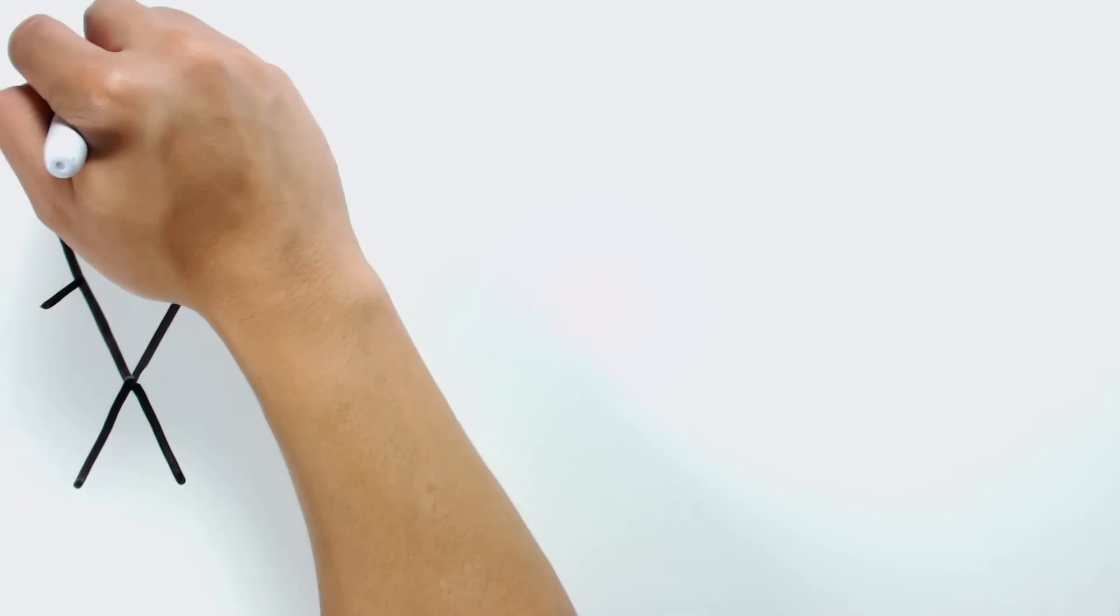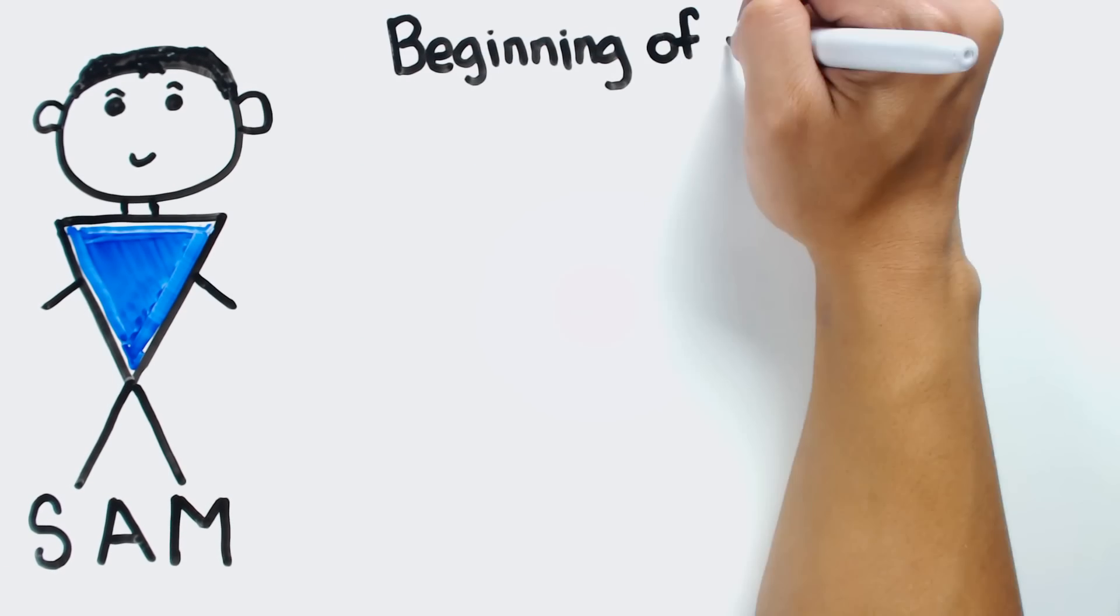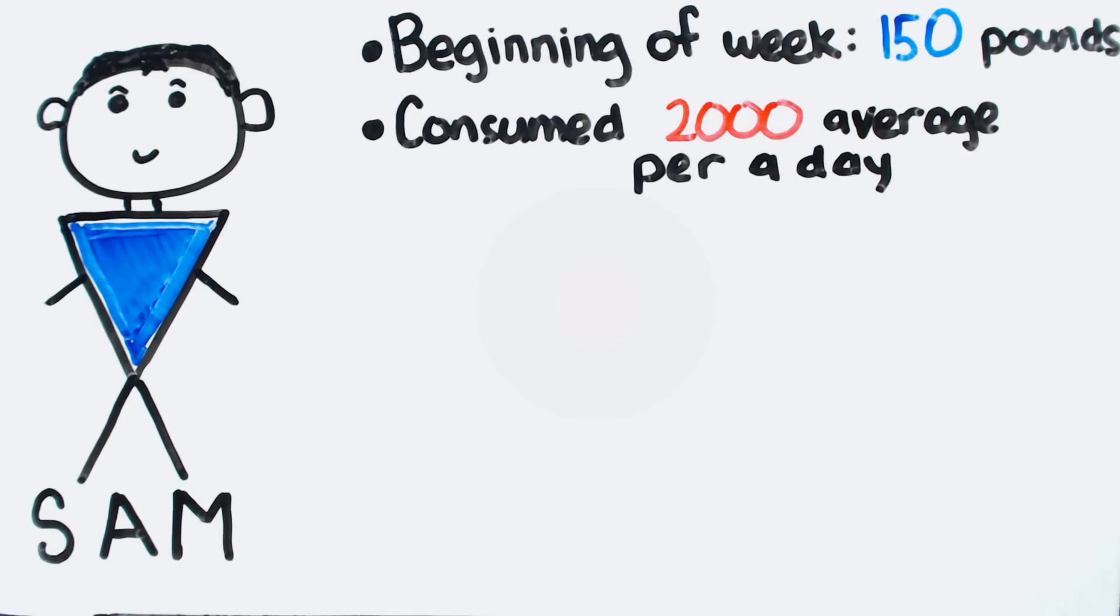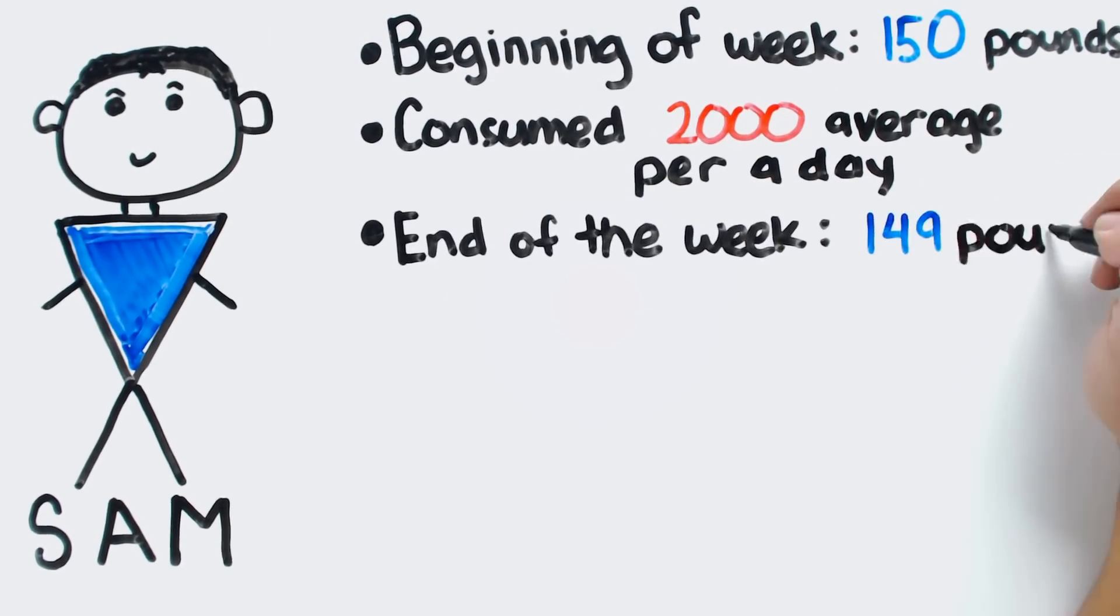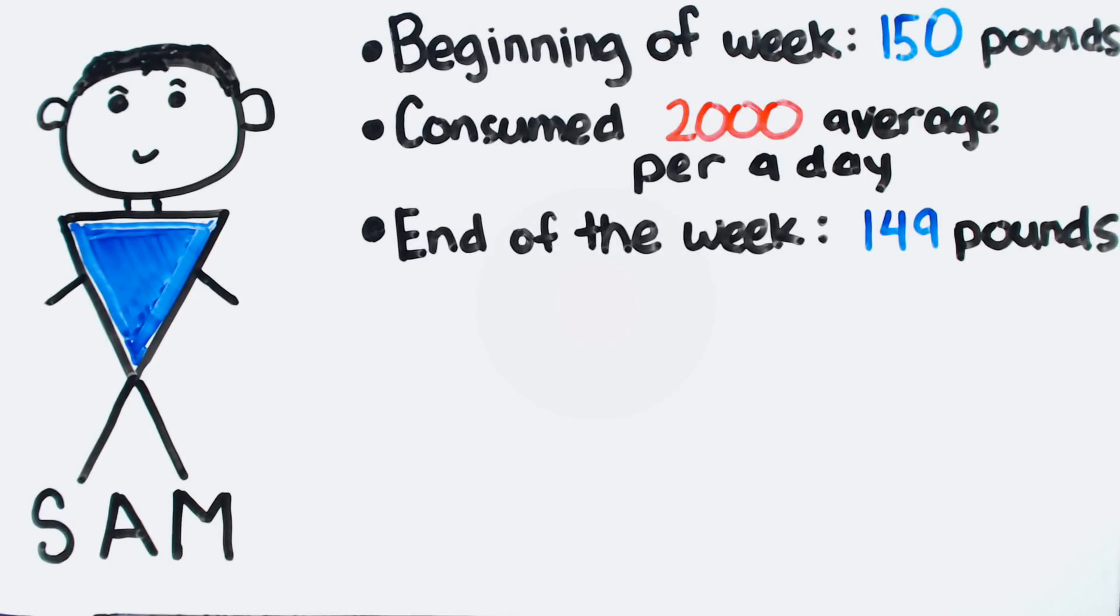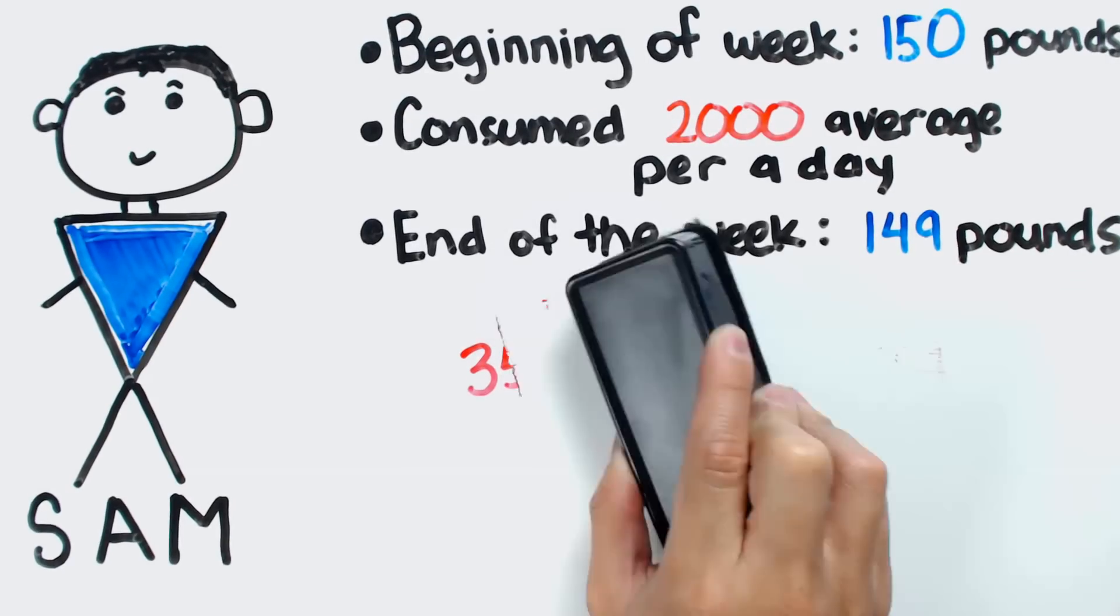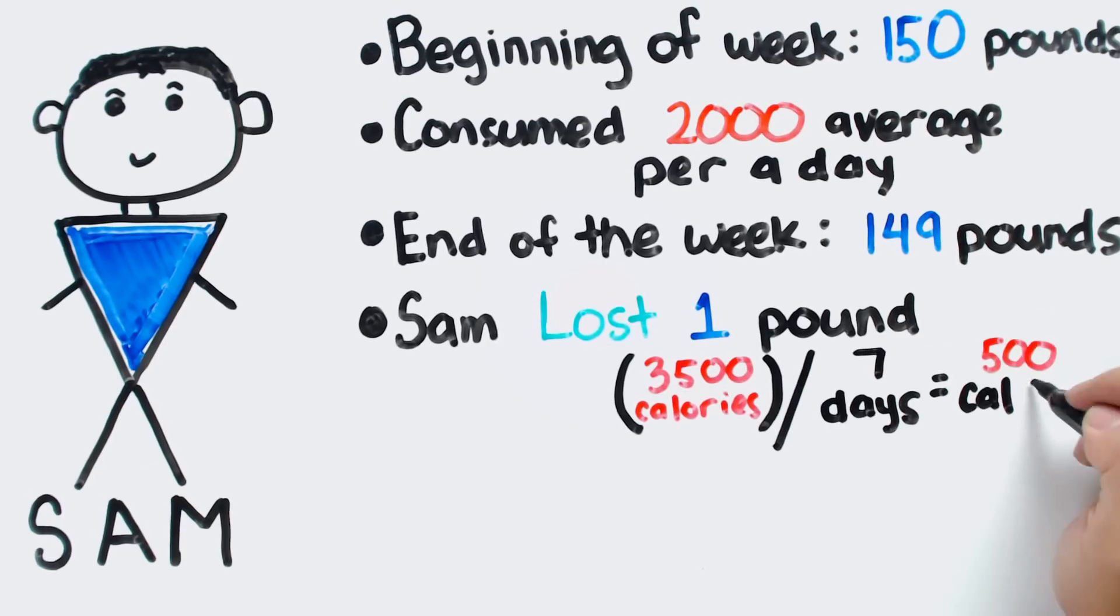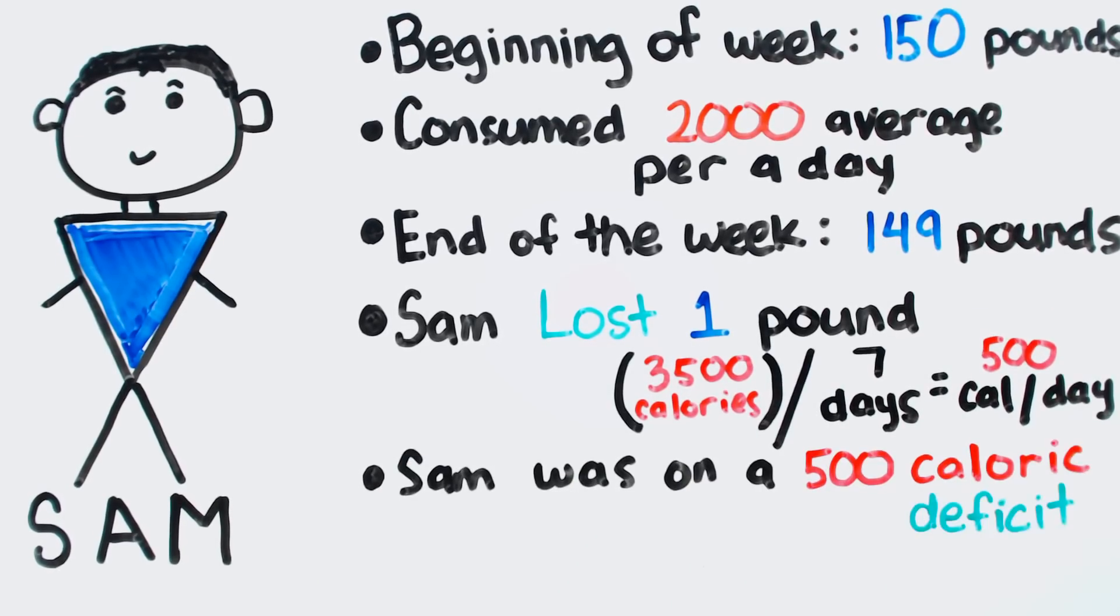Take this for example. Sam was 150 pounds at the beginning of the week. He ate, on average, 2000 calories each day. At the end of the week, Sam weighed only 149 pounds. We know that 3500 calories equals 1 pound, meaning that Sam burned 3500 calories more than he consumed. Divide that by 7 days, and that equals a 500 daily caloric deficit.